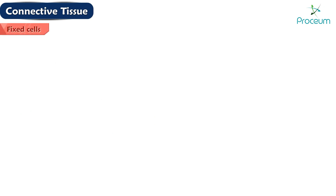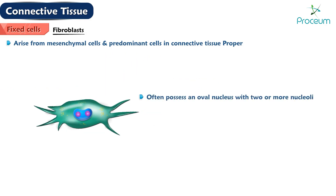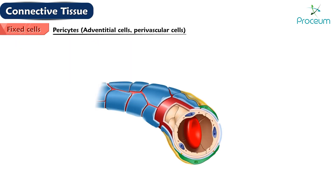Fibroblasts arise from mesenchymal cells and are the predominant cells in connective tissue proper. They often possess an oval nucleus with two or more nucleoli. Fibroblasts seldom undergo mitosis except in wound healing. They may differentiate into other cell types under certain conditions.